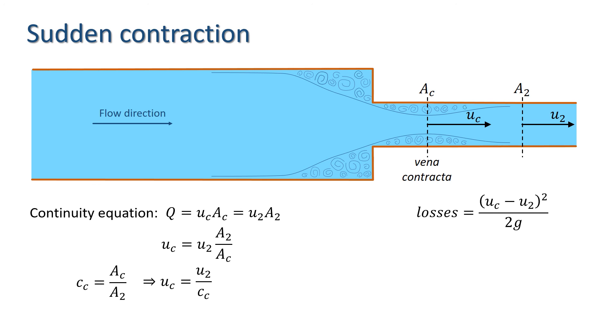This means that we can write the equation for the losses in the following form. We can see from this equation that the losses at a sudden contraction of a pipe are a function of velocity in the smaller pipe and the coefficient of contraction only.